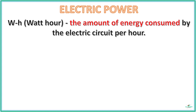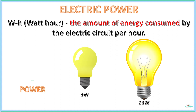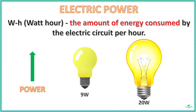For example, a 9-watt bulb consumes 9 watts of power when turned on for an hour, whereas a 20-watt bulb consumes 20 watts per hour. Higher the power, higher the consumption. Generally, devices with higher power consumption produce higher output — that is, a 20-watt bulb glows brighter than a 9-watt bulb.